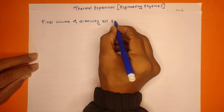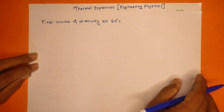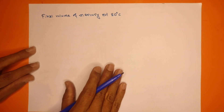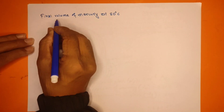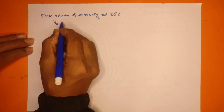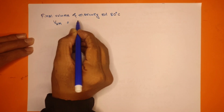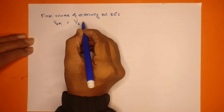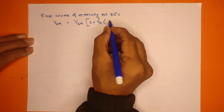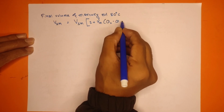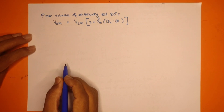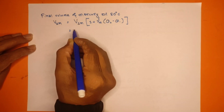Final temperature is 80 degrees Celsius, initial temperature is 10 degrees Celsius. Using the thermal expansion formula: final volume V₂ equals initial volume into 1 plus gamma into (theta 2 minus theta 1).